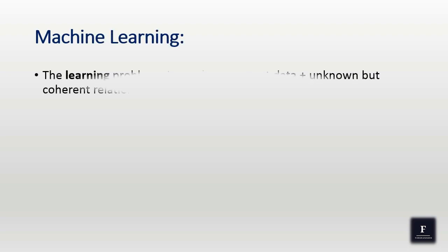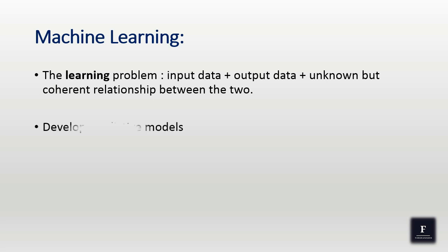Now let us get into the basic concepts of machine learning. A learning problem consists of some input data, output data, and some unknown but coherent relationship between the two. ML algorithms generally develop a predictive model wherein the prediction is a data instance belonging to a class or a cluster.